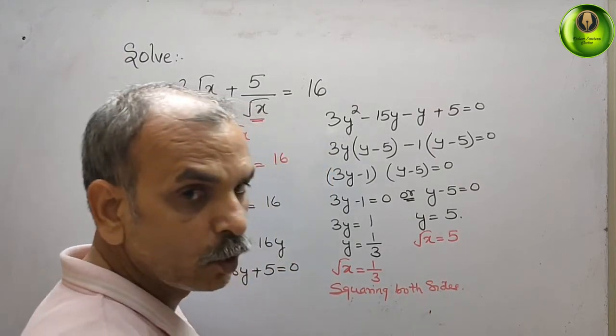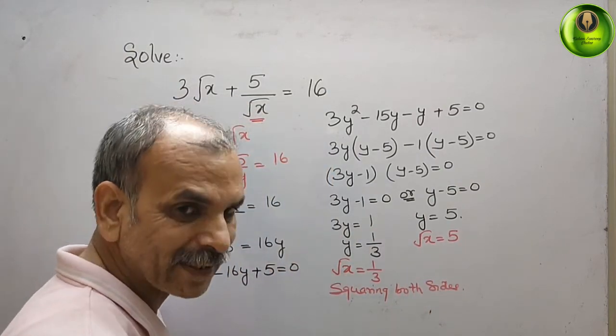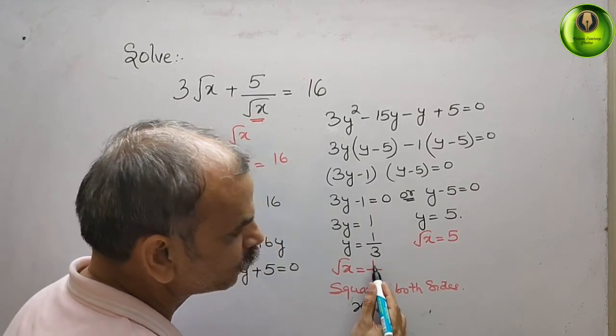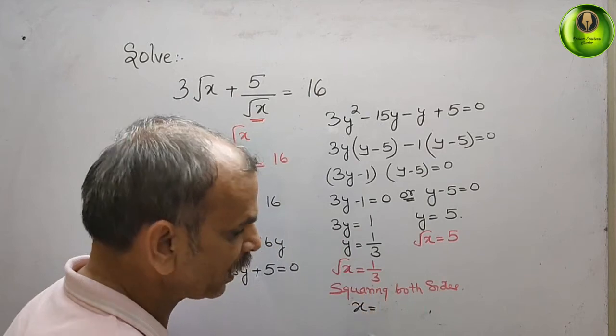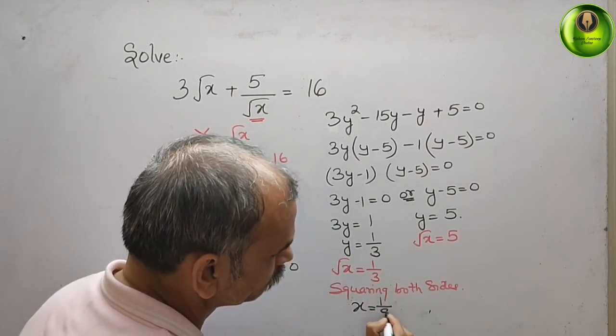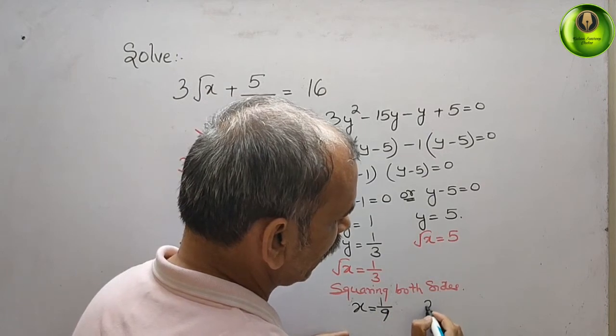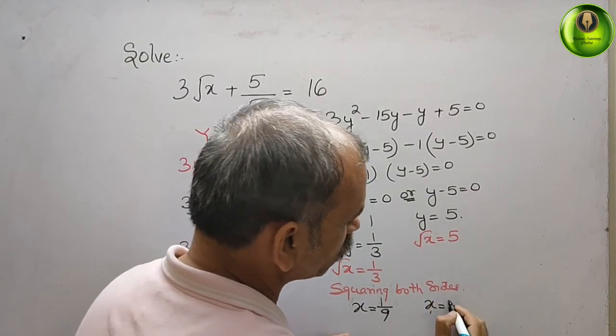What you will get? Root x square is x. That is equal to 1 by 3 square is 1 by 9. And here you can see x is equal to 5 square is 25.